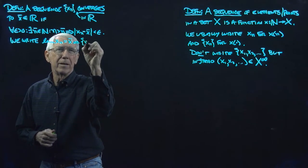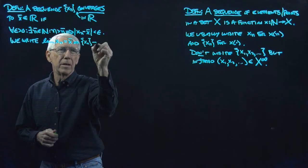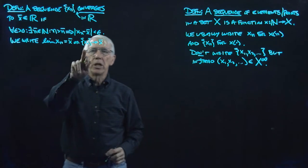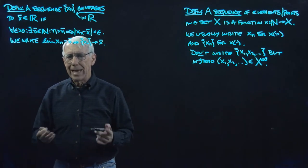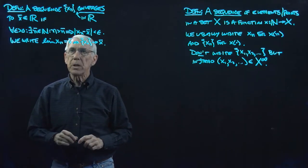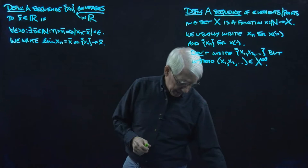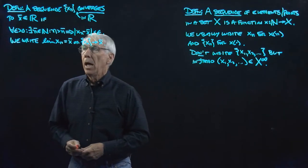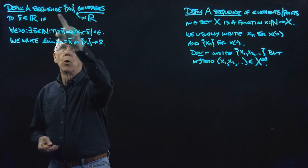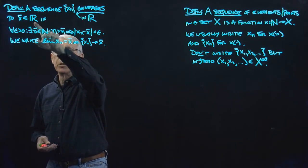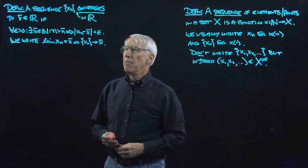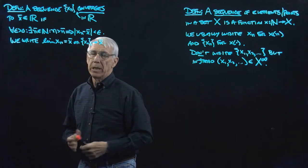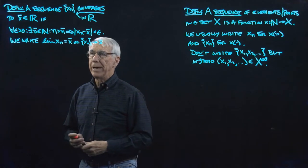And we sometimes write things this way, saying that the sequence goes to x̄ as its limit. So let's come back and point out that I wrote this for sequences of real numbers, sequences in R, and of course I use the absolute value because I'm in R, where the absolute value makes sense.